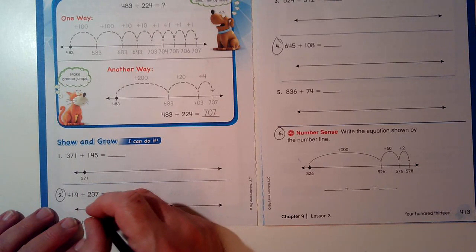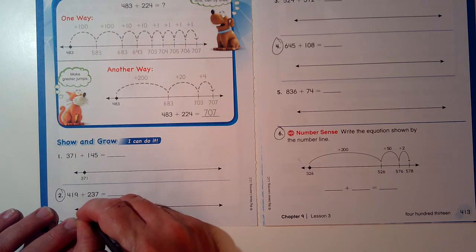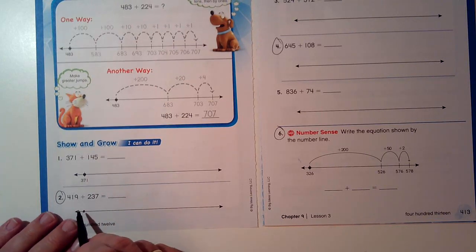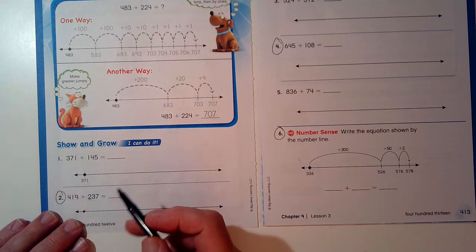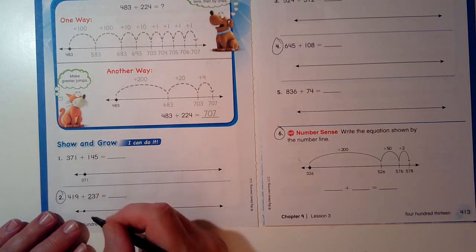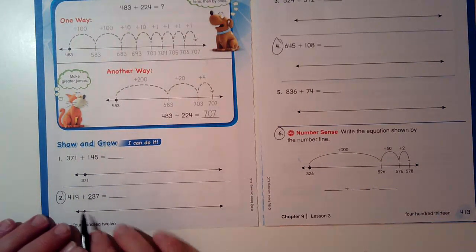419 plus 237. Now, we've been practicing different ways to do this, and we said that you can add both hundreds at the same time. You can add three tens at the same time when you're adding.